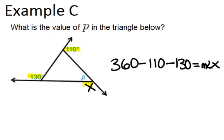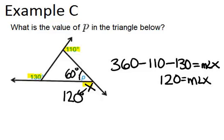So 360 minus 110 minus 130 is 120. The measure of angle x is 120, and because angle P and angle x are a linear pair, that means angle P has to be 60 degrees, because it has to add to 180 with the 120. So the measure of angle P equals 60 degrees.